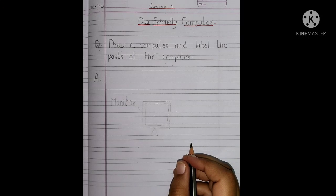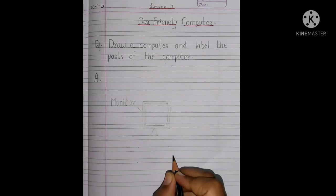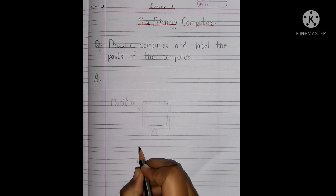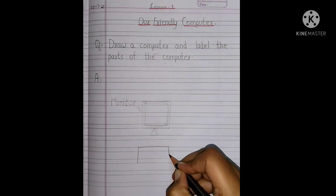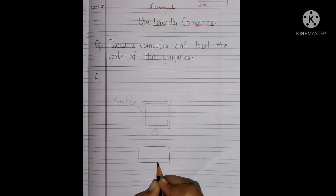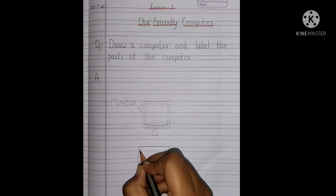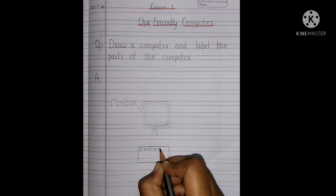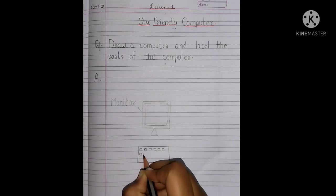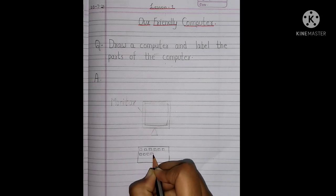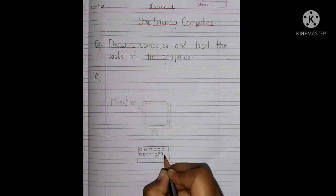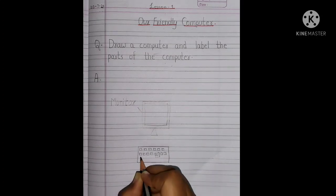Now, children, we will learn how to draw a keyboard. See this, children? A keyboard is in the shape of a rectangle. A keyboard has many keys, children. All these small buttons are the keys of the keyboard. And then, children, this is an enter key, which helps us to go to the next line.